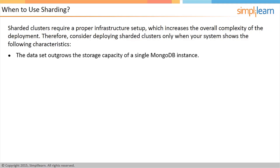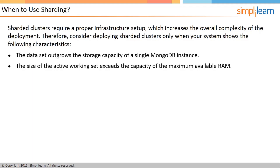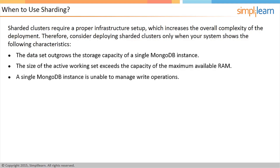The data set outgrows the storage capacity of a single MongoDB instance. The size of the active working set exceeds the capacity of the maximum available RAM. A single MongoDB instance is unable to manage write operations. In the absence of these characteristics, sharding will not benefit your system.